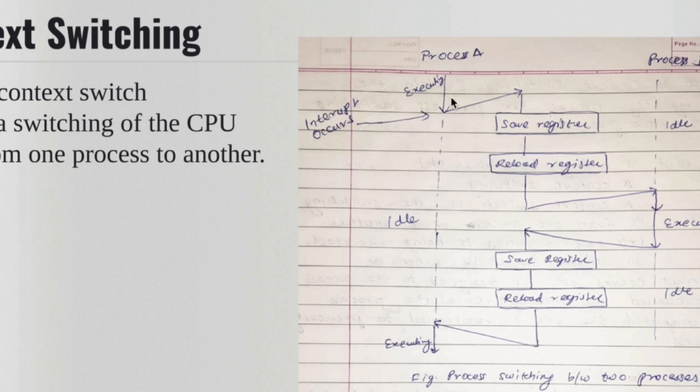You can see that it's executing here. Let's say process B causes an interrupt. So interrupt occurs over here and basically process B wants to execute. So what's going to happen is that process A is going to be suspended at that point.